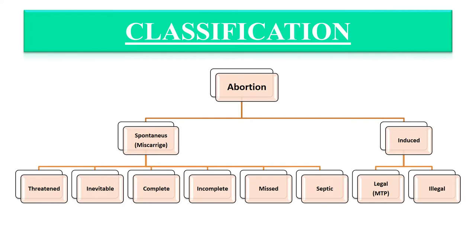Spontaneous abortion, also known as miscarriage, is the natural death of an embryo or fetus before it is able to survive independently. Spontaneous abortion is divided into six types: threatened, inevitable, complete, incomplete, missed, and septic. The second type is induced abortion, which is divided into two types: legal and illegal.